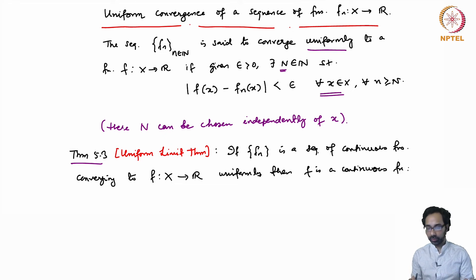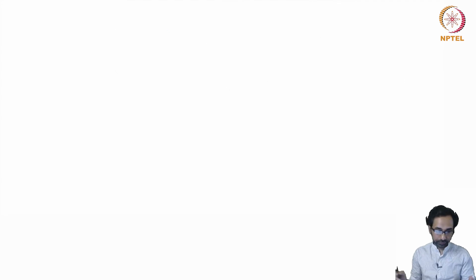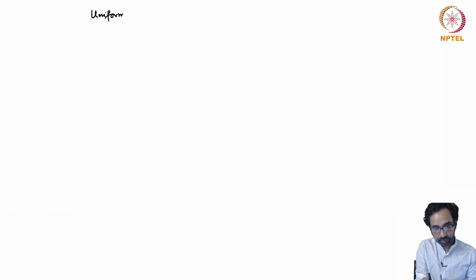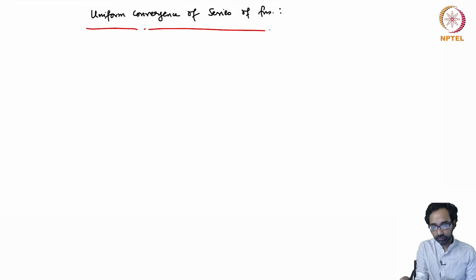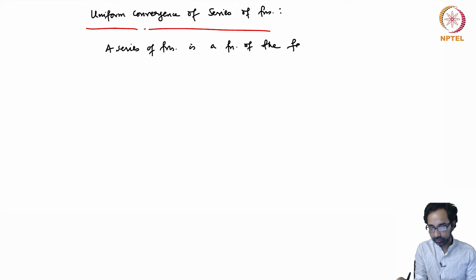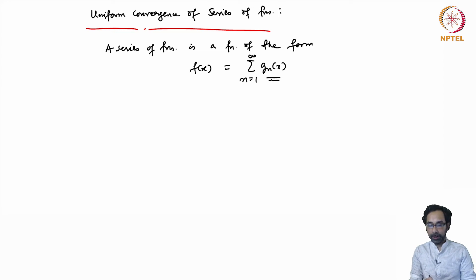We will use this property of uniform convergence, but in a slightly different way — in the form of convergence of series. A series of functions is a function of the form F(x) equal to an infinite sum from n=1 to infinity of some functions gₙ(x). This is a sequence of functions gₙ, and if you sum them up you get a series. If this series is convergent, then F is well-defined.